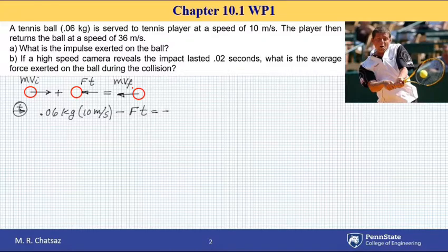Observe that I'm choosing velocity to the left as negative. So rearranging this equation and solving it for FT, which is impulse J...